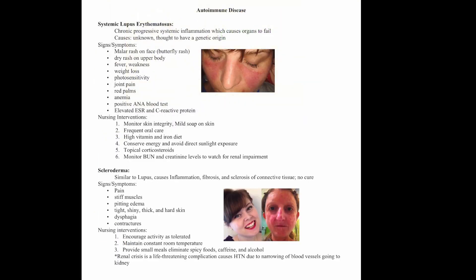Now let's talk about autoimmune diseases. Systemic lupus is a chronic progressive systemic inflammation that causes organ failure. The cause is unknown but thought to be genetic. Symptoms include a malar rash on the face — also called a butterfly rash, which is a key point; if you see this in a question, the answer is most likely lupus. Other symptoms include dry rash on the upper body, fever, weakness, weight loss, photosensitivity, joint pain, red palms, and anemia. Lab findings show a positive ANA blood test and elevated ESR and C-reactive protein. Nursing interventions include monitoring skin integrity, using mild soap, providing frequent oral care, a high vitamin and iron diet, conserving energy, avoiding direct sunlight, applying topical corticosteroids, and monitoring BUN and creatinine levels to watch for renal impairment.